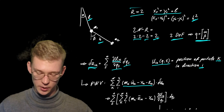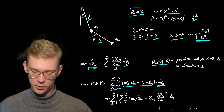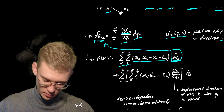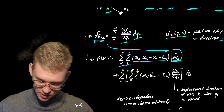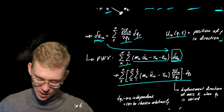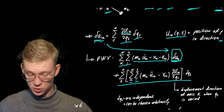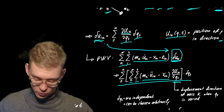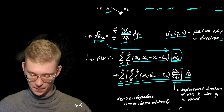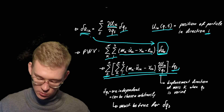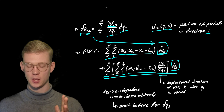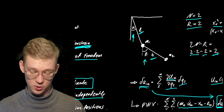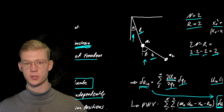Putting it all into our principle of virtual work — where we have the dynamic equilibrium in every direction of every point mass times our displacement — we get a sum over all bodies, a sum over each direction, the dynamic equilibrium, and the possible displacement, summed over all possible q's. The most important part is that our q's can be varied independently: I can change alpha without having to think about what beta is doing.